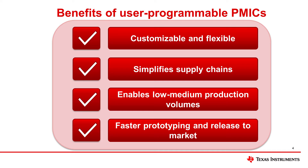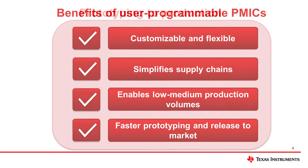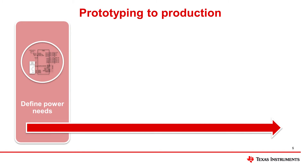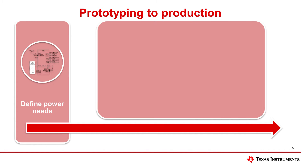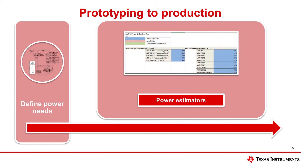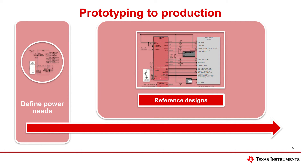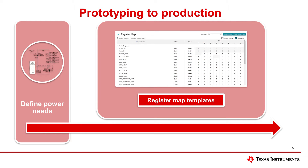What does a user programmable PMIC design flow look like? First, begin with defining system power requirements, such as your output rail voltages, power sequences, low power modes, and so on. TI has different design tools to help you build your system, including power estimators, reference designs, and register map templates.